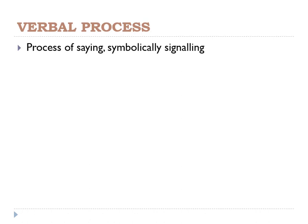Now we're moving on to the last of the verbs of doing, which is the verbal process. A verbal process is a process of saying or symbolically signaling — things that we do with our mouth. It can also include a text, a notice, or a warning board. Verbal process, like mental, usually includes projection because when you say 'I tell him that blah blah blah,' the blah blah blah is usually a different clause, which means projection.